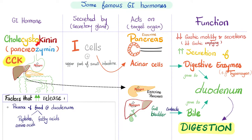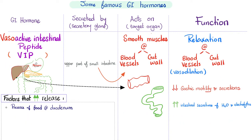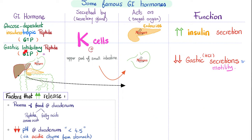Cholecystokinin-pancreosymin: why call it cholecystokinin? Because it contracts the cholecyst — the gallbladder — to dish the bile out into the duodenum. Why call it pancreosymin? Because it goes to the exocrine pancreas and tells it to release the enzymes — but it goes to the acinus, not the duct, like secretin. The acinus makes your enzymes; the duct makes water and bicarbonate. Next, VIP — very relaxing hormone. It relaxes smooth muscles in blood vessels, causing vasodilation, and smooth muscles in the gut wall, causing relaxation and dilation. Next, GIP is released by the K-cells. This is why eating sugar raises insulin in your blood in greater amounts than injecting glucose into your veins. And as with the rest, GIP hates your stomach — the only one that loves your stomach is gastrin.